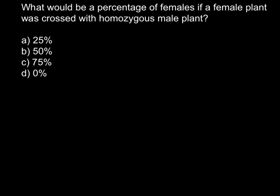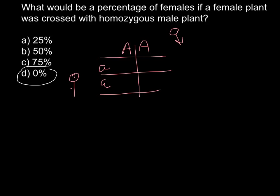So the correct answer is D. Here is a simple Mendelian trait that can be explained with a Punnett square. As I told you earlier, female plant is homozygous recessive and male plant in this case is homozygous dominant. So this is two capital A's and this is male and this row is female.